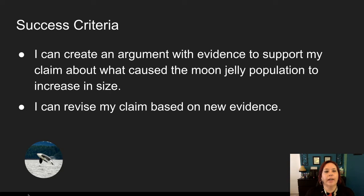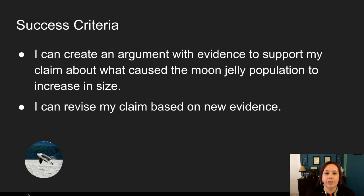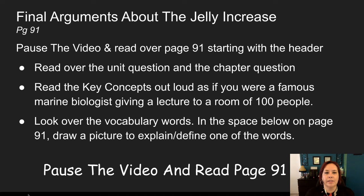Success criteria: I can create an argument with evidence to support my claim about what caused the Moon Jelly population to increase in size, and I can revise my claim based on new evidence.